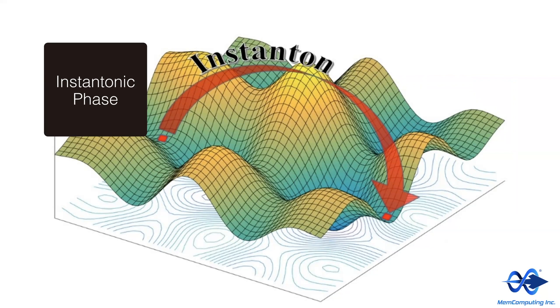That is, every time there is an instantonic jump, the circuit goes into a more stable state than before the jump, from one saddle point with some unstable directions to another with less unstable directions. This process is repeated by the MEM computing self-organizing logic circuit until the last jump. The last jump is to the equilibrium point where there are only stable directions, and this represents the solution of the problem.